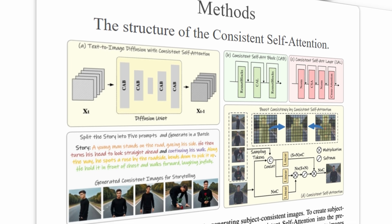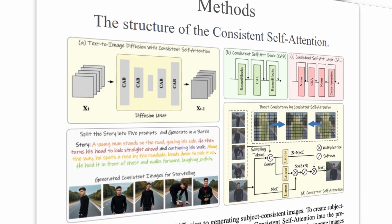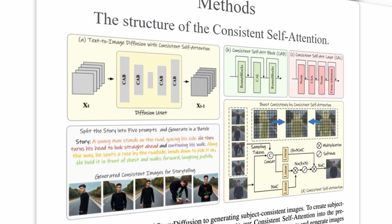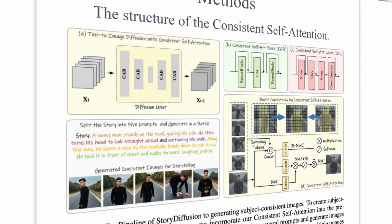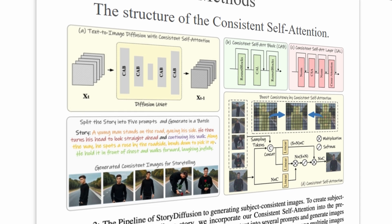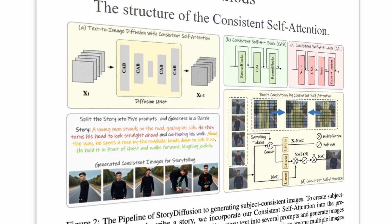Consistent self-attention helps Story Diffusion identify and validate attributes like a person's clothes, pose, and facial features to ensure they remain the same across images.